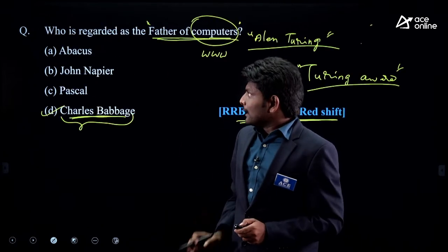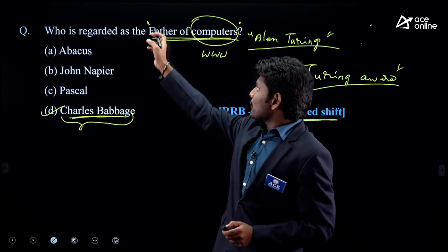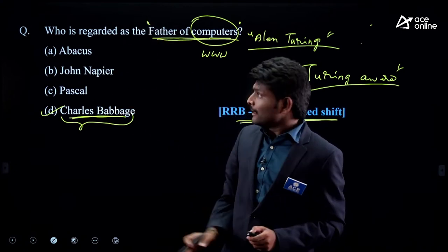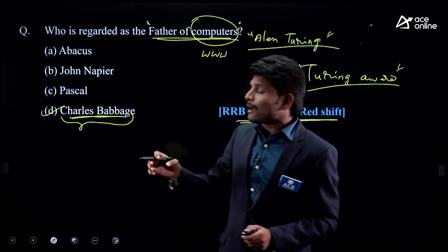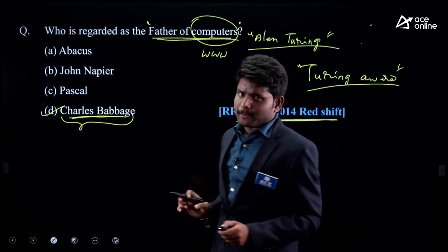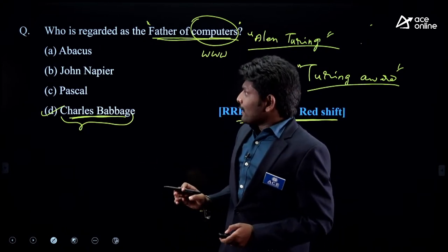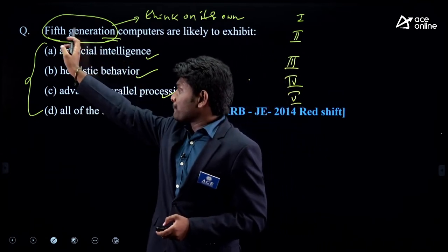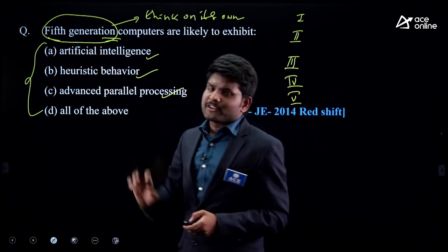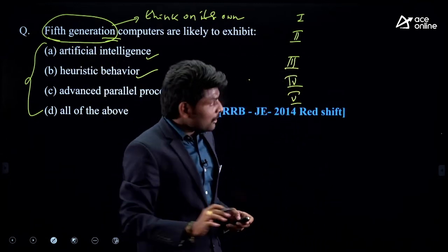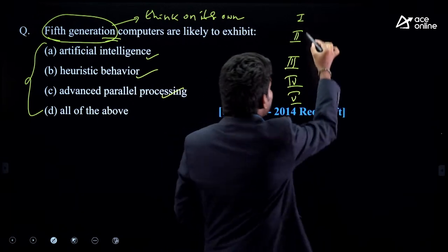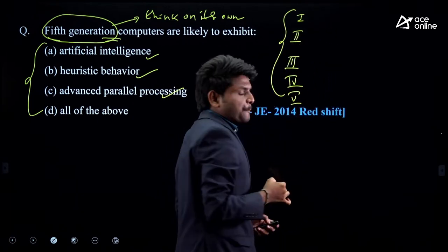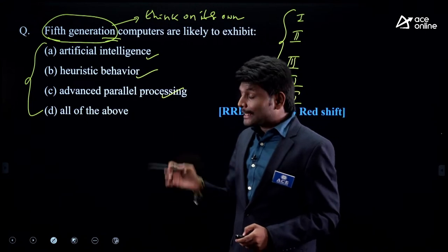You have understood they are asking about scientists or contributors in computer science. When you see this question, you need to recall all such information. In the next question, they are asking about fifth generation. So you need to recall entire knowledge about all five generations of computers.